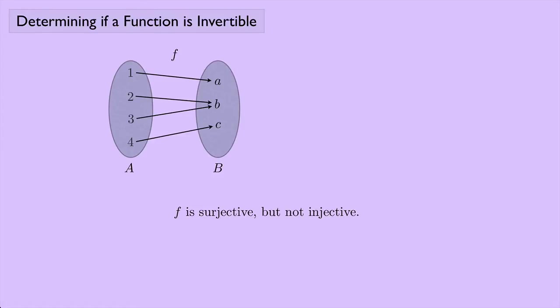This function F is surjective but not injective. It's surjective because every element in the set B has something mapped to it. But it's not injective because the element B has two different things mapped to it.